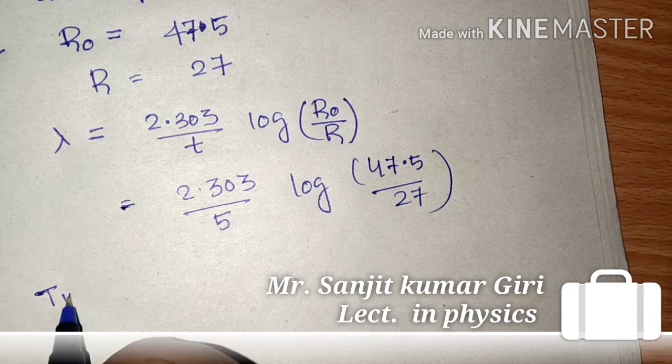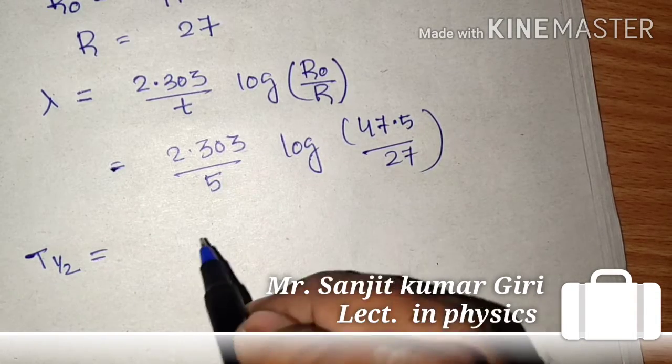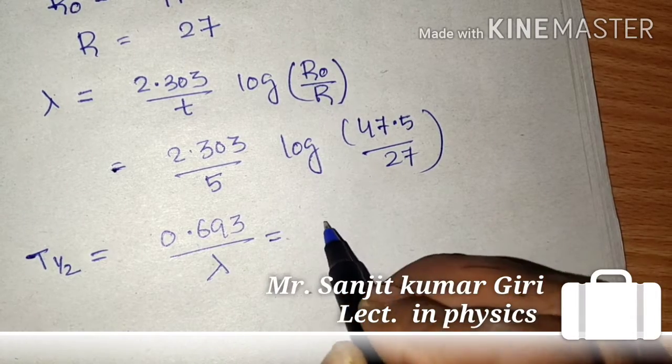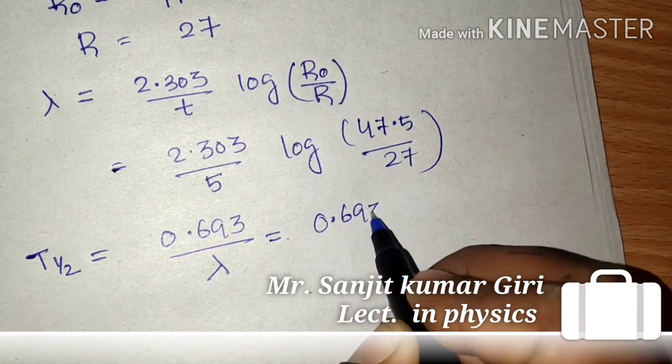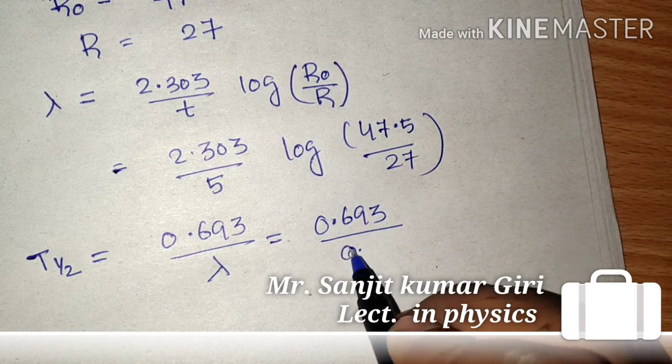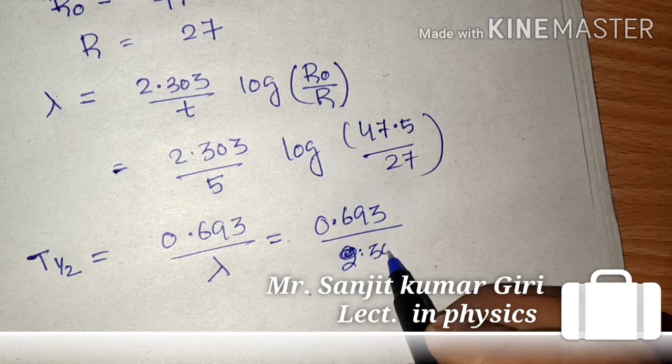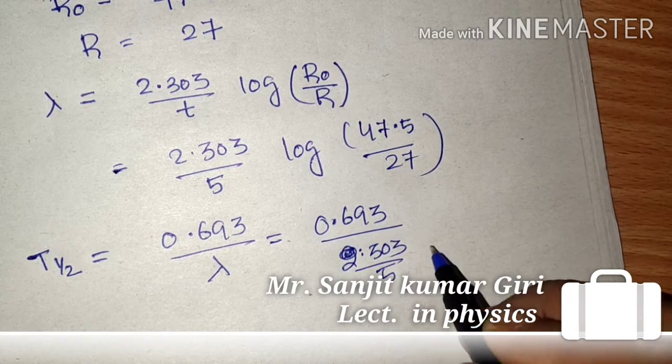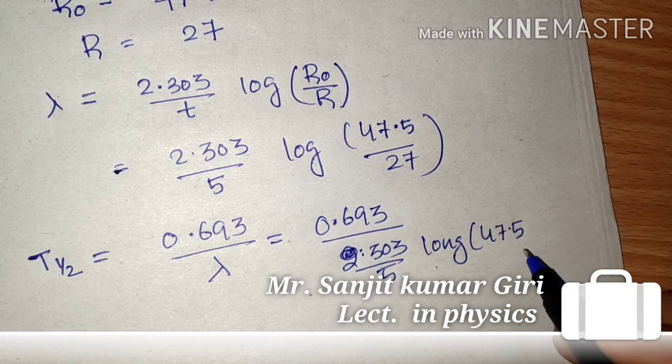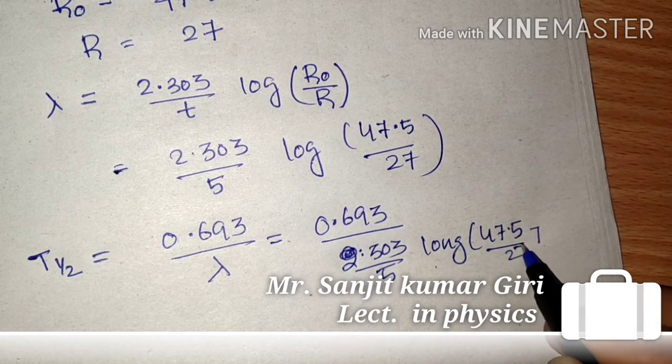So what will be the half life? This is equal to 0.693 by lambda. So this is equal to 0.693 by lambda, which is 2.303 by 5 into log 47.5 by 27.